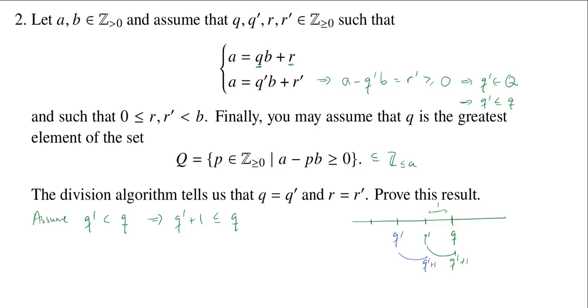Okay, well, why is this good? Well, let's say that I took A minus, and now I'm going to use Q prime plus 1 times B. Now, because Q prime plus 1 is less than or equal to Q, I actually know that Q prime plus 1 has to be in this set big Q.